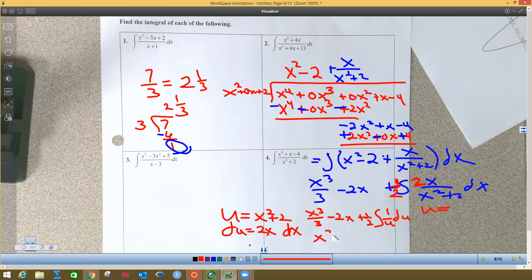So this will end up being x cubed over three minus two x plus one half natural log absolute value of u. Now, we cannot leave u. You cannot leave u in a problem, so I'm going to go ahead and stick this back in for it. This is going to be the absolute value of x squared plus two, and absolute values.